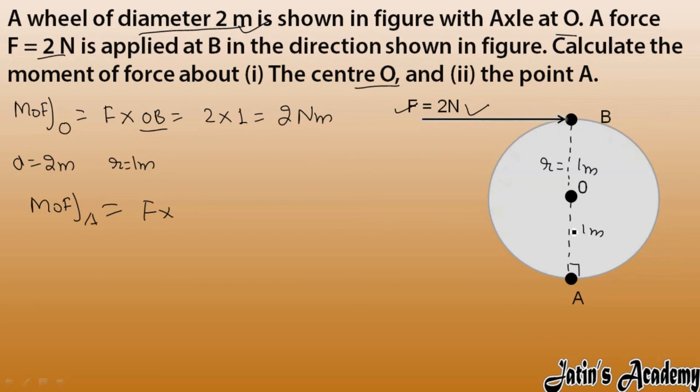So you can write BA or AB. Force into perpendicular distance, force we have 2, perpendicular distance we have 2, so 2 into 2 is 4 Newton meters. This is the moment of force about O point and this is the moment of force about A point.